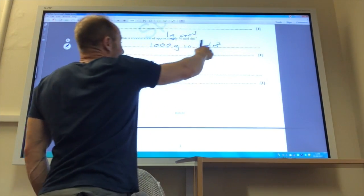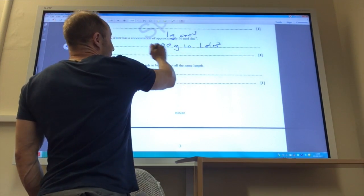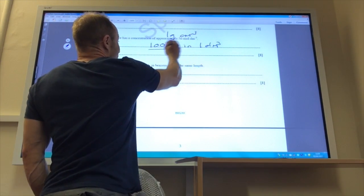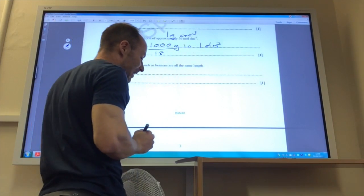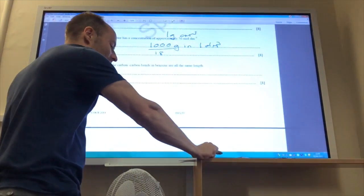Therefore, to find the concentration in moles per decimetre cubed, divide by the molar mass of water, which is 18, and a thousand divided by 18 gives you 56.